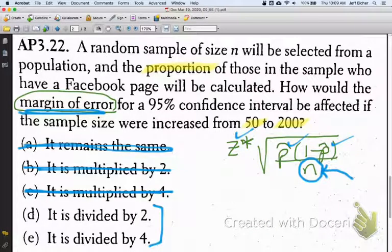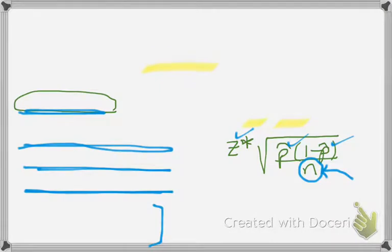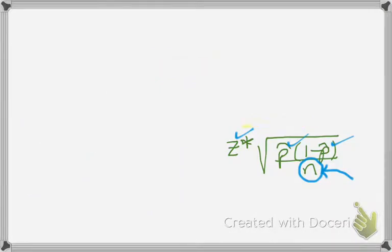How will it change? Well, one approach you can do is just plug some numbers in and see how it changes. So, let's do that. Z star would be 1.96 for 95% confidence. We don't know p hat, so let's just use anything you want, but let's just use 0.5 in here. And we'll plug 50 in and see what we get for the margin of error.